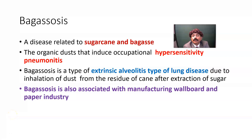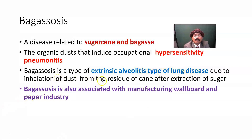What is Bagassosis? Bagassosis is a disease. It is an occupational disease related to sugarcane and bagasse exposure. The organic dust that induces occupational hypersensitivity pneumonitis. Bagassosis is a type of extrinsic alveolitis, a type of lung disease, due to inhalation of dust from the residue of cane after extraction of sugar.